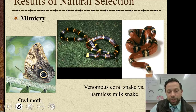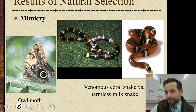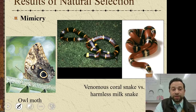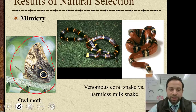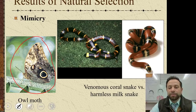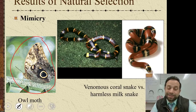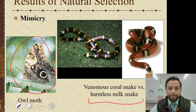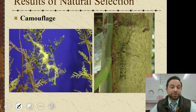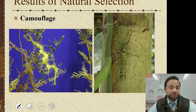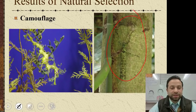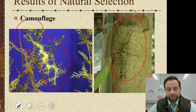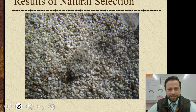Here are some results of natural selection. First, mimicry — when you mimic something that could potentially be dangerous. This owl moth mimics an owl. The harmless milk snake mimics the venomous coral snake because it gains an advantage. Then there's camouflage — the idea that you blend in with your environment so that predators can't see you. You can see examples like this at the Monterey Aquarium.